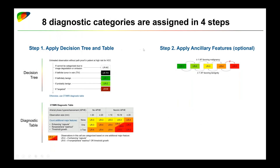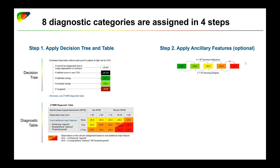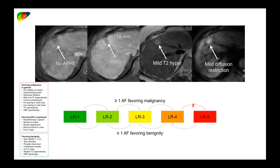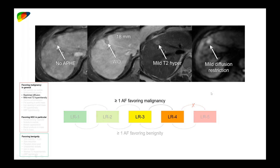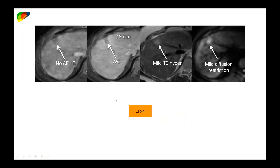That's step one. Step two is to apply ancillary features — this step is encouraged but listed as optional. In this case, we have two ancillary features of malignancy: mild T2 hyperintensity and restricted diffusion. Even though we have more than one ancillary feature, we can only increase the category by one, so we go from LR3 to LR4. The final category assigned is LR4.